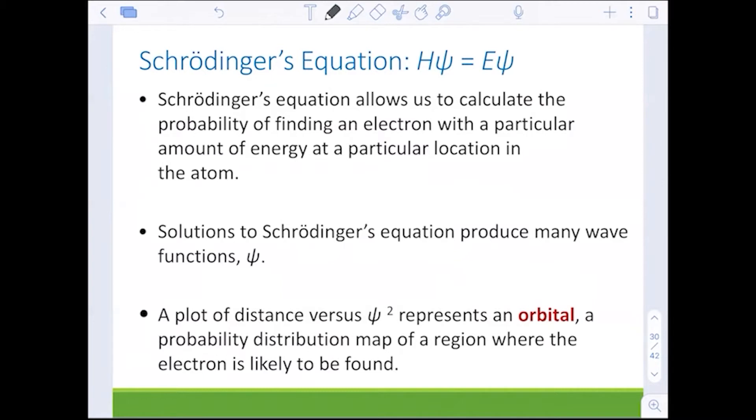What is really important for us is that Schrödinger did the math. If you take physical chemistry, which is usually in your junior or senior year if you're a chem or biochem major, excellent class, really exciting. However, the only thing we need to know is that when we plot a distance versus psi squared, it represents an orbital, a probability of where the electron will likely be found.